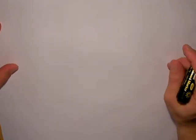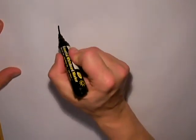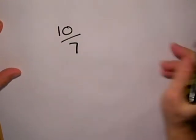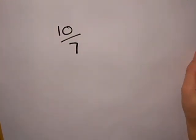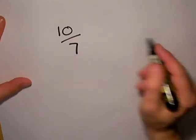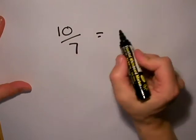I'm going to turn some top-heavy fractions into mixed numbers. The top-heavy fraction I'm going to start with is 10/7. Now we must remember that 7/7 makes one whole one, so I can think of 10/7 as being